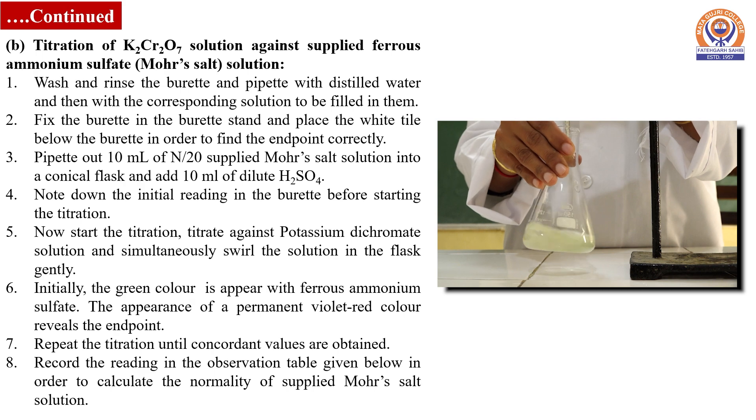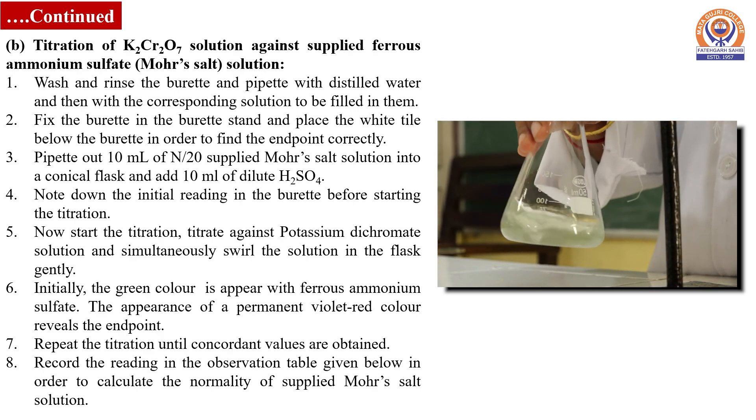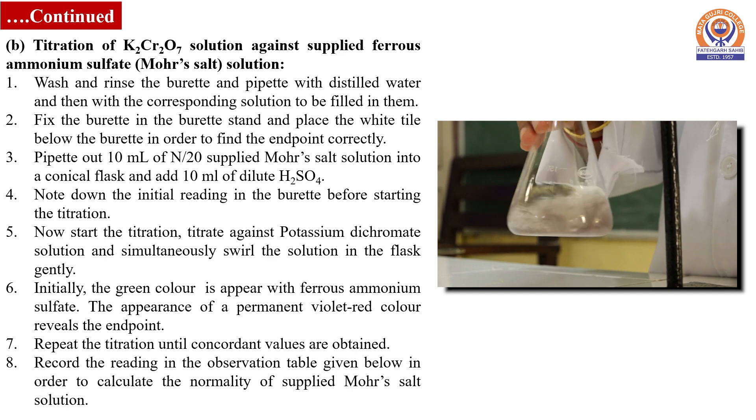Add 2 to 3 drops of indicator, which is N-phenyl anthranilic acid, in the titration flask. Start adding potassium dichromate solution from burette to the titration flask, and at the endpoint the green color of the solution will change to violet-red. Note the volume of potassium dichromate solution which is used for the titration.